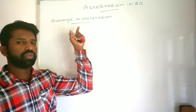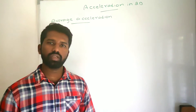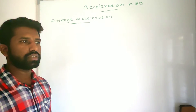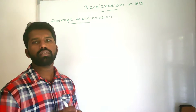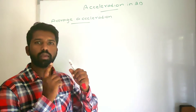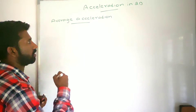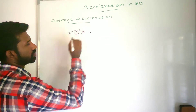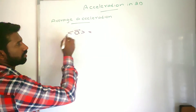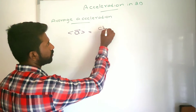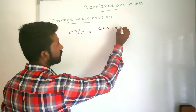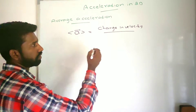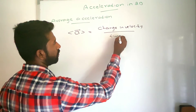In two-dimensional motion we are going to study average acceleration and instantaneous acceleration. First I will discuss average acceleration. Average acceleration means it is the acceleration in a particular interval of time. Average acceleration is equal to the change in velocity in a particular interval divided by that time interval.